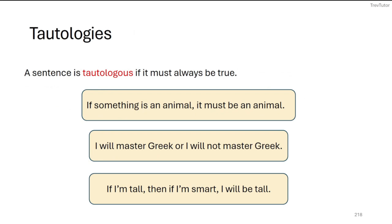We say a sentence is tautologist if it's always true. So in other words, the content doesn't really matter. It's just about the fact that given the sentence structure, yeah, of course, whatever you say has to be true. So if something is an animal, it must be an animal. Okay, yeah, that's always true. If you have an animal, then by definition, it's an animal.